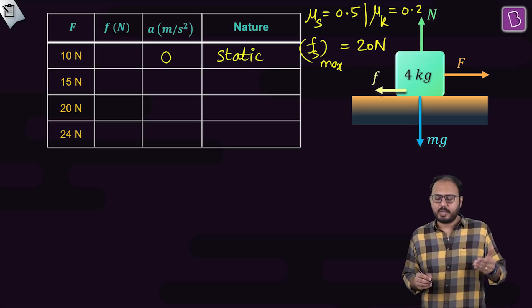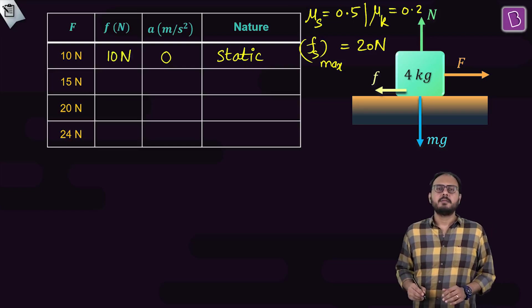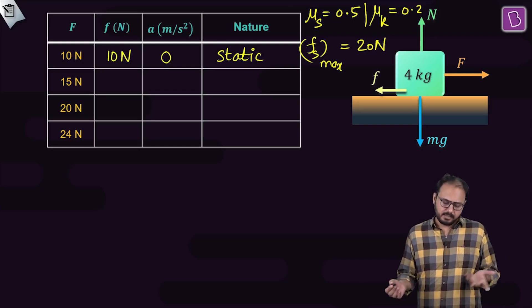And just because 20 newton is available, that doesn't mean 20 will act. So how much do you need to counter the external 10 newton? You need only 10 newton. So since I am less than f external, there you go.